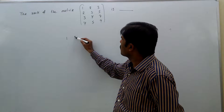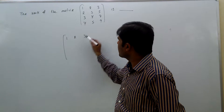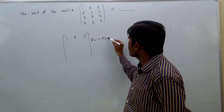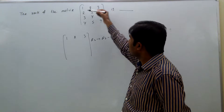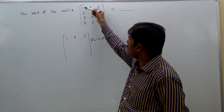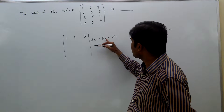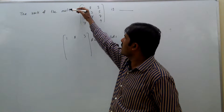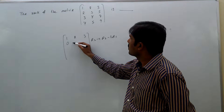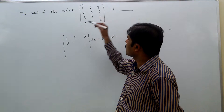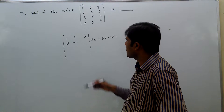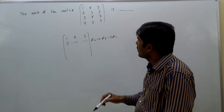The first row is written as 1, 2, 3. The second row R2 is written as R2 minus 2R1. Why 2R1? See here in R2 the element is 2, and in R1 it is 1, so 2 minus 2 becomes 0. That gives us: 2 minus 2×1 = 0, then 3 minus 2×4 = 3 minus 4 = minus 1, and 5 minus 2×3 = 5 minus 6 = minus 1.